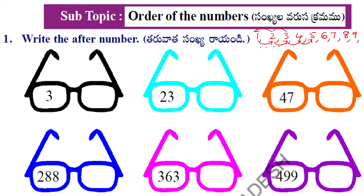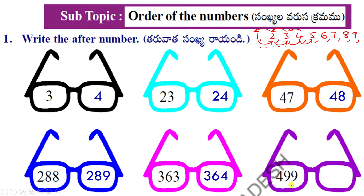How do you remember? 3 before number is 2. 4 before number — before number. 5 before number — this is the preceding number. And 4 before number, 3 is the preceding number. Next number is 4.